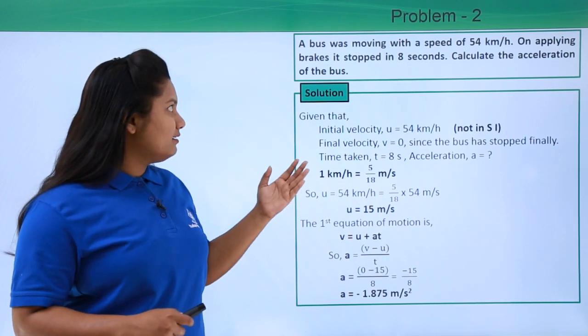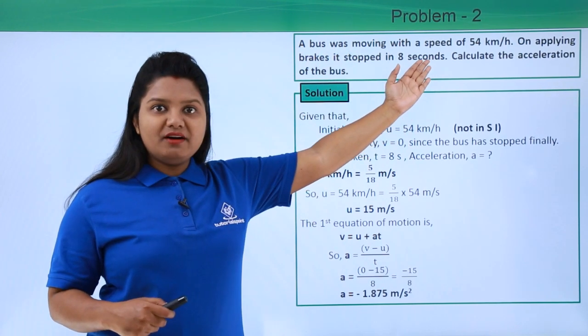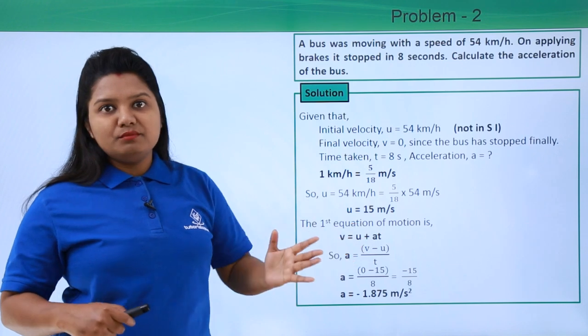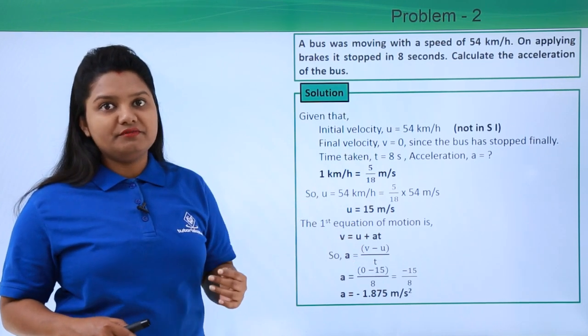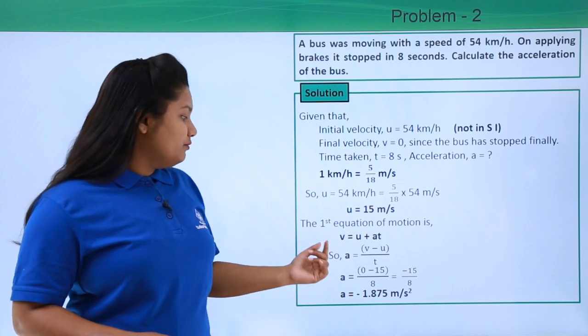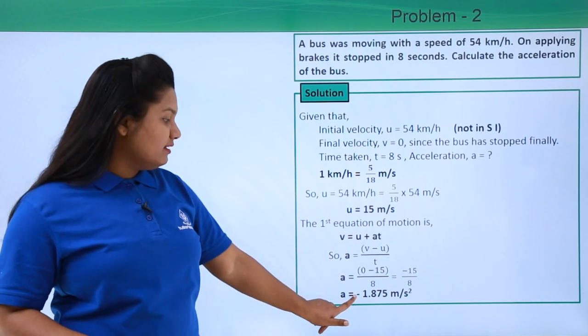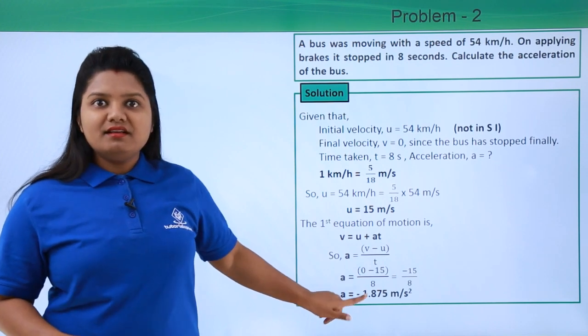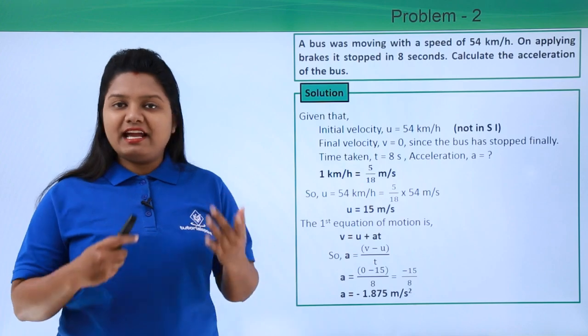So in this case, the body was traveling with 54 kilometers per hour and gradually it has come to stop by reducing its velocity at every point of time. That is the reason why we have got a negative sign for acceleration in this case. I hope you have understood the solution of this problem. Thanks for watching.